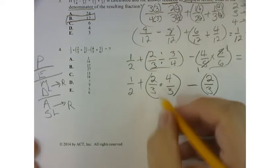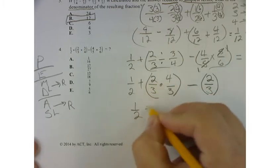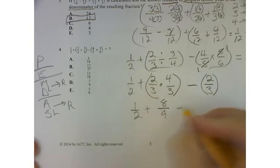So then what I want to do is this. I can just multiply straight across. So I've got 1 half plus 2 times 4 is 8, 3 times 3 is 9, minus 2 over 3.